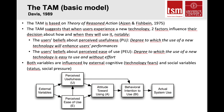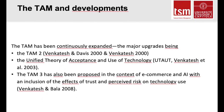External variables influence perceived ease of use and perceived usefulness, which then influences attitude toward using the technology, subsequently behavioral intention to use it, and finally actual system use. The TAM has been continuously expanded. Major upgrades include TAM 2, the Unified Theory of Acceptance and Use of Technology, and TAM 3, also proposed in the context of e-commerce and artificial intelligence with inclusion of effects of trust and perceived risk.